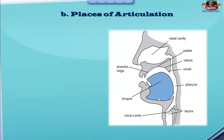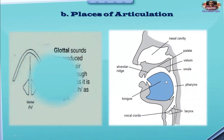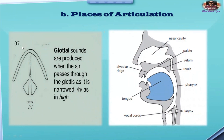Number seven — the last place of articulation: glottal sounds. Glottal sounds occur at the passage of the vocal cords. Glottal sounds are produced when the air passes through the glottis as it is narrowed. An example is /h/ as in 'high' — this is actually a glottal sound which passes through the vocal cords, and this articulation occurs within the vocal cords.